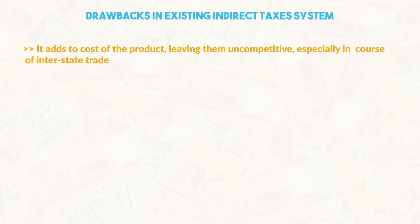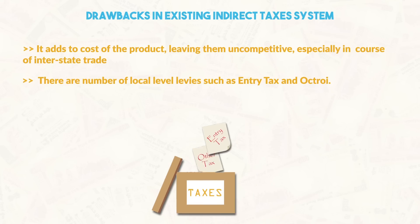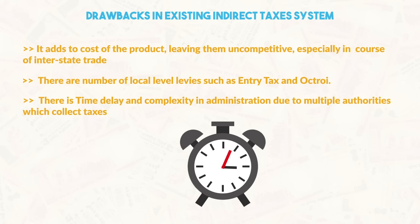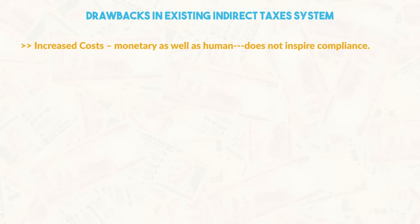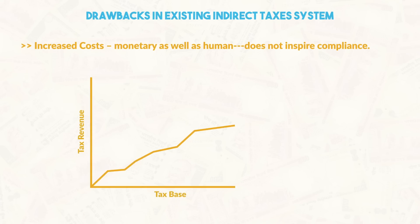This is the existing system of indirect taxes in the country, which has a number of problems. It adds to the cost of the product, leaving them uncompetitive, especially in interstate trade. Secondly, there are a number of local level levies such as entry tax and octroi. Third, there is time delay and complexity in administration due to multiple authorities which collect taxes. These problems result in increased costs — monetary as well as human — and therefore the system does not inspire compliance, leading to a tendency to evade taxes across the supply chain.